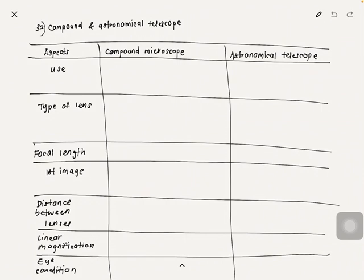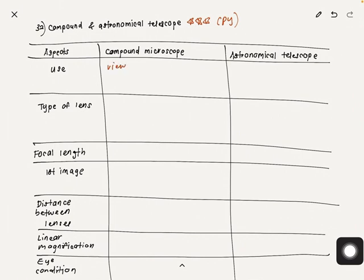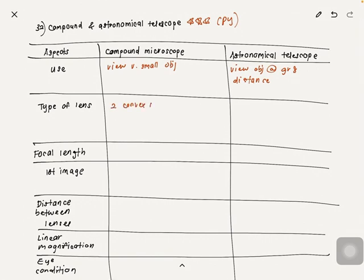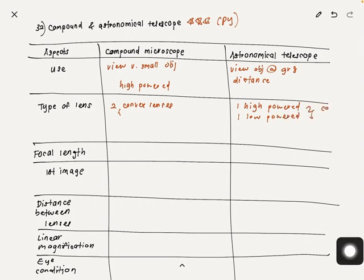Next we'll look at the differences between the compound microscope and astronomical telescope — this was a past exam question so it's important. The compound microscope is used to view very small objects, while the astronomical telescope is used to view objects at great distances. The compound microscope uses two high-powered convex lenses, while the astronomical telescope uses one high-powered convex lens and one low-powered convex lens.